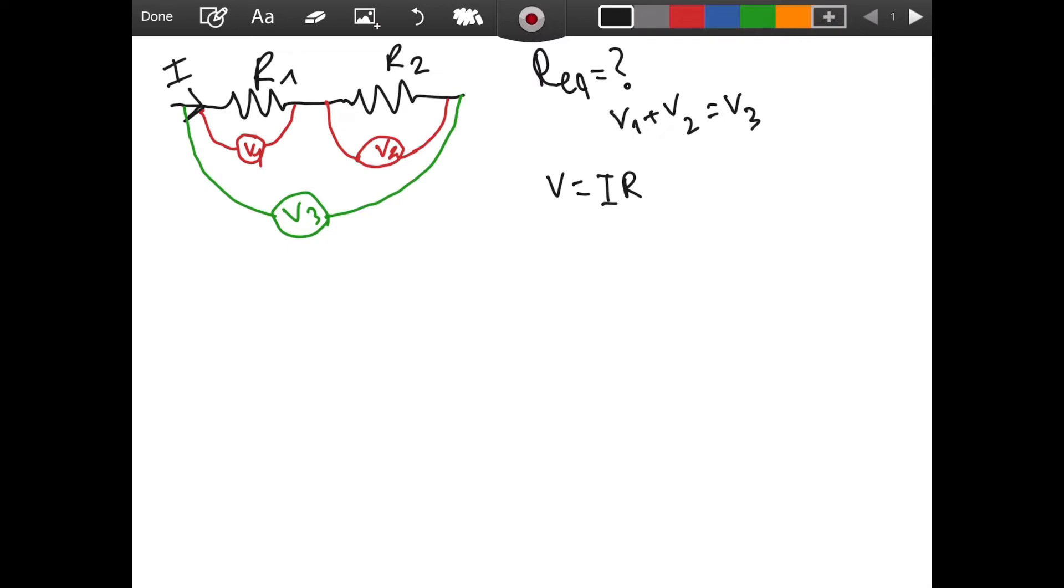So what do we have? We say that V1 is equal to I times R1. And of course, V2 is equal to I times R2. We multiply the resistance value with the current that is passing through it to find the voltage across that resistor.